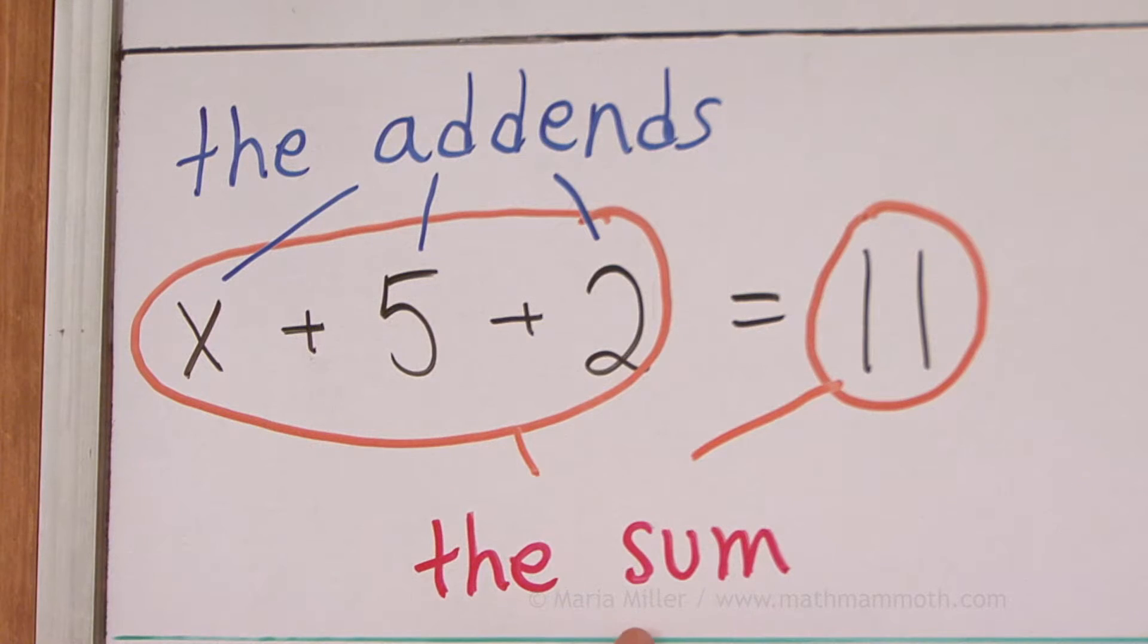For example, the sum. That would be the answer for an addition problem, right? But it is also the addition itself, that is also called the sum. For example, this here is called the sum of x and 5 and 2. Now, these individual numbers we are adding are called the addends.